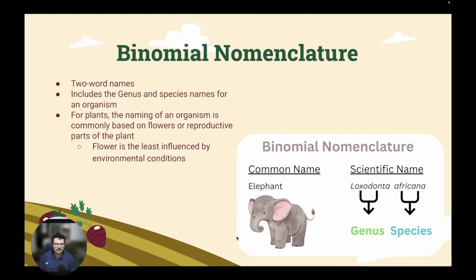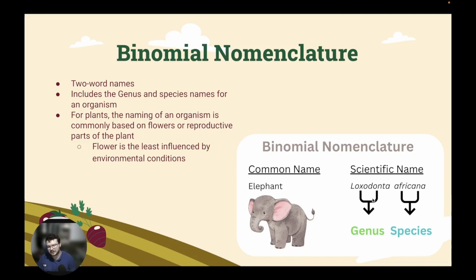For plants, the naming of an organism is commonly based on the flowers or the reproductive parts of the plant, because the flower is the part that's going to be least influenced by environmental conditions. The size or shape of the leaf may be influenced by the environment, but the flower and the fruit are typically hard-encoded things that will be the same everywhere in the world. As an example, an elephant — we would commonly just call it an elephant, but scientists in America and Africa may not call it the same thing. So we use the scientific name Loxodonta africana. Loxodonta is the genus — capitalized and italicized — and africana is the species — italicized but lowercase.